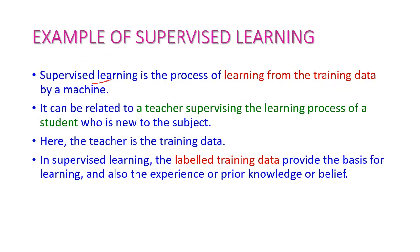Supervised learning is the process of learning from training data by the machine — the machine learns a model using the training data. We can relate this with a teacher supervising the learning process of a student: the student tries to learn a new subject and the teacher supervises his studies. Here the teacher is analogous to the training data. The labeled training data provides the basis for learning, experience, and prior knowledge — this is called the supervised learning algorithm.